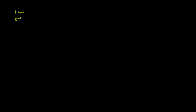We need to evaluate the limit as x approaches infinity of 4x squared minus 5x, all of that over 1 minus 3x squared. Infinity is kind of a strange number — you can't just plug in infinity and see what happens. But if you wanted to evaluate this limit, if you put in really large numbers in the numerator, you're going to see that it approaches infinity as x approaches infinity.